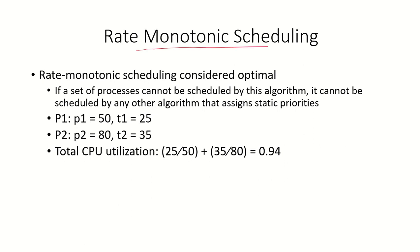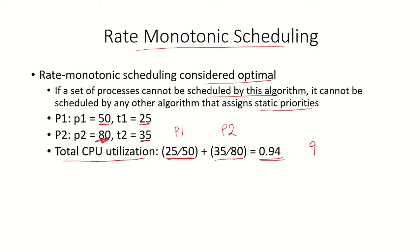Rate monotonic scheduling is considered optimal — if a set of processes cannot be scheduled by this algorithm, then no other algorithm that assigns static priorities can schedule them either. Computing the total CPU utilization gives 25/50 for P1 plus 35/100 for P2, which comes out to approximately 94%. That means we still have some cycles remaining for scheduling any additional processes that may arrive.